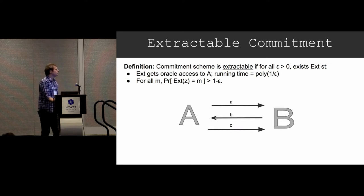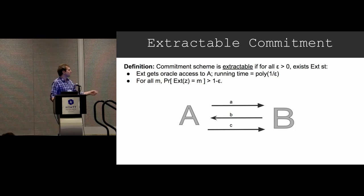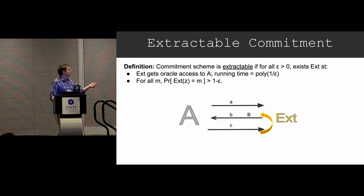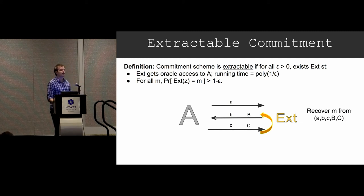Visually, if you're looking at a three-round scheme, what's happening is that the extractor is going to take A, B, C as input, then rewind and send a new capital B, get a new capital C, and somehow recover M from these five values that it has.